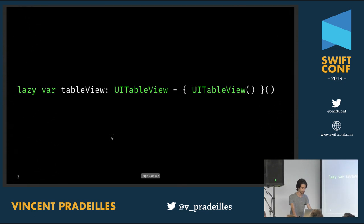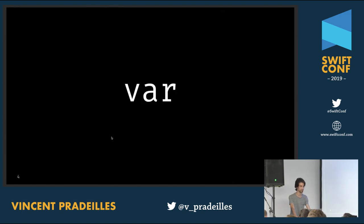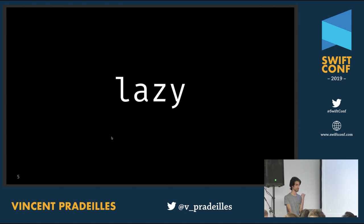I want to begin by showing you some simple Swift code. It involves two keywords: `lazy` and `var`. You're probably familiar with these keywords, but let's talk about them. `var` lets us allocate a variable — it's a simple behavior, just allocating memory. Then there's `lazy`, which people who've written Objective-C remember writing by hand. Lazy loading is a much more complex behavior: it involves testing, instantiating a value if it hasn't been instantiated yet, then returning it.